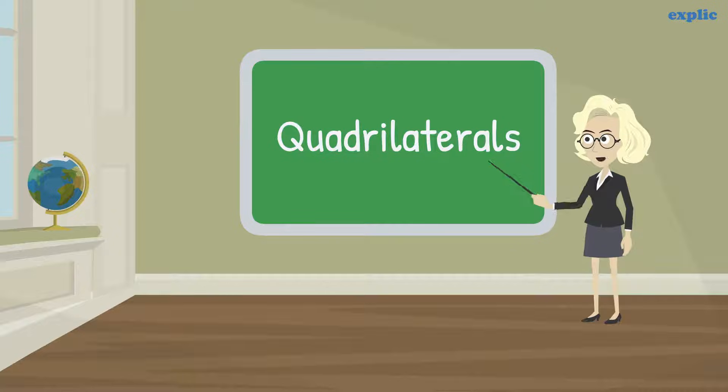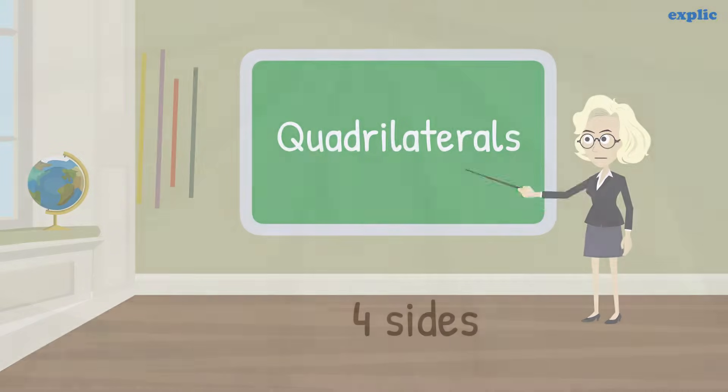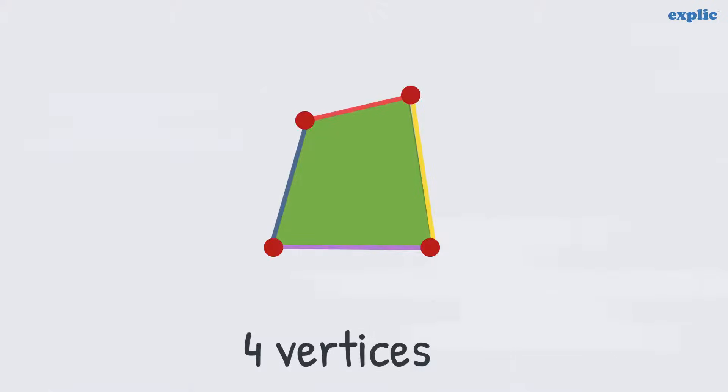Let's learn about quadrilaterals and their types. As we already know, a quadrilateral has four sides, four vertices, and four angles.